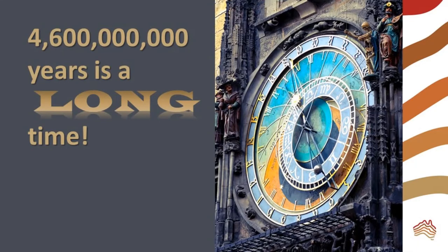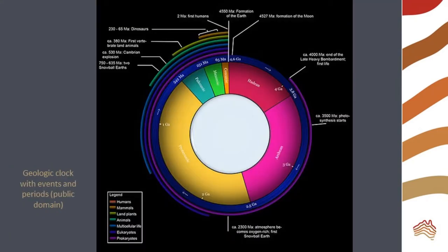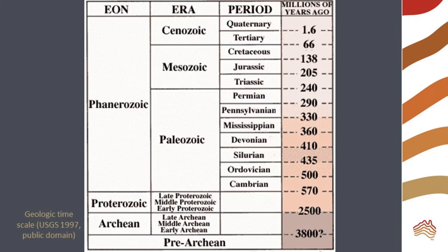4,600,000,000 years is a very long time that is hard for us to understand. Geologists have represented the vastness of geologic time as a spiral or a clock. However, you will most commonly see geologic time in a table like this one.